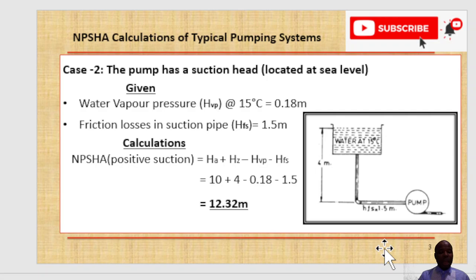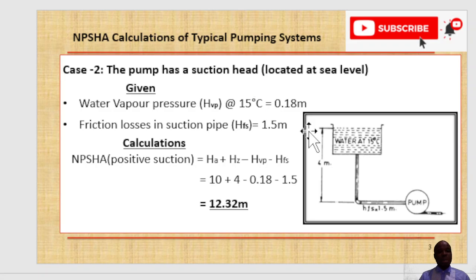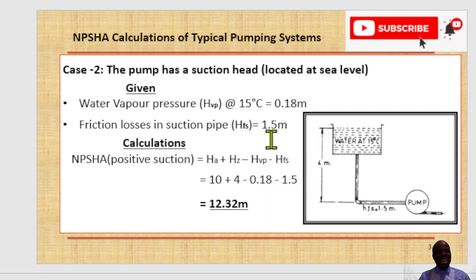For Case 2 the process fluid is again water, and the pumping temperature is 15°C. The vapor pressure at this pumping temperature is given as 0.18 meter. If your vapor pressure is in kg/cm², you need to convert it to meters using specific gravity — refer to the previously uploaded sessions on NPSHA for that conversion. Friction losses in the suction pipe are given as 1.5 meters.